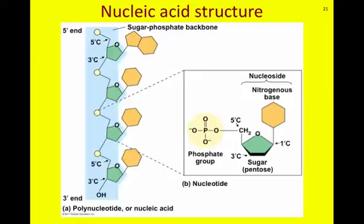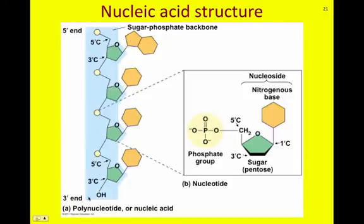At the free end of a strand of nucleic acid where there is a phosphate, that is known as the five-prime end. It is known as five-prime because this phosphate group is attached to the five-prime carbon. At the other free end of the strand where the hydroxyl group is the endpoint, that is known as the three-prime end, because the hydroxyl group is attached to the three-prime carbon.